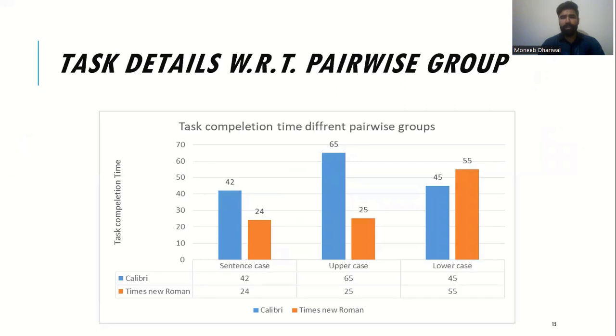The descriptive statistics of the data here shows that the task completion time of the sentence case, along with the serif group, Times New Roman was recorded the lowest, however the completion time of the upper case and sans serif group Calibri was recorded significantly higher.